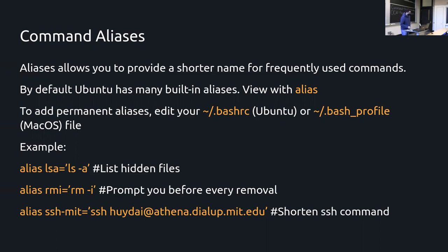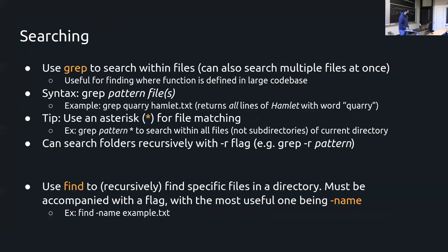Just to add on about aliases: different operating systems can be a little weird — it might not be .bashrc, it might be something for zsh like .zshrc, as we saw yesterday when having issues. That's something you can look up online since different operating systems differ in some ways. Now moving on to grep and find, which are the main ways to search in the terminal.